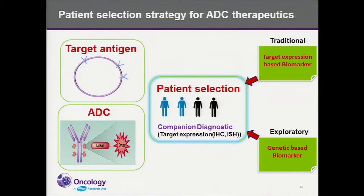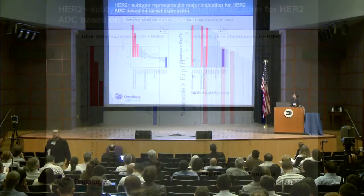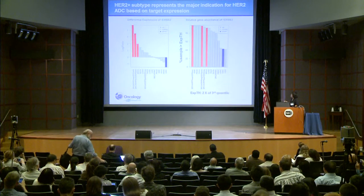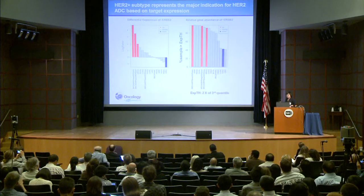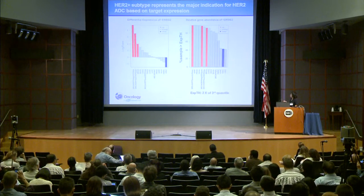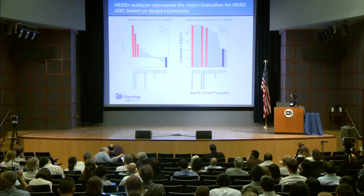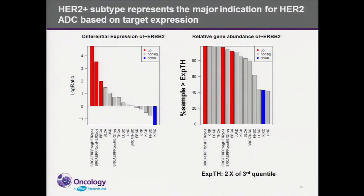Here is an example of using RNA-seq data from TCGA to estimate particular target populations for intended ADC targets, using HER2 as an example. Similarly to the target expression analysis, we used both the differentiation between normal and tumor tissue and the absolute expression level across different tumor types. As expected, HER2 is significantly expressed in HER2-positive breast subtypes, and HER2 has very high expression in the HER2-positive patient population.